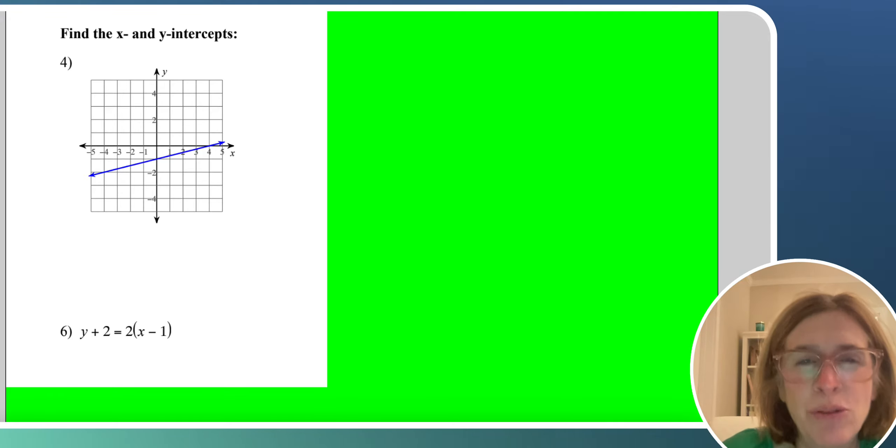You know, there's a lot of confusion around these two terms, x and y intercepts, because there's so many things that have x and y in them. For example, you have the x axis, which is this line that goes right across the coordinate plane, and the y axis. That's not the x and y intercepts. Those are called axes.